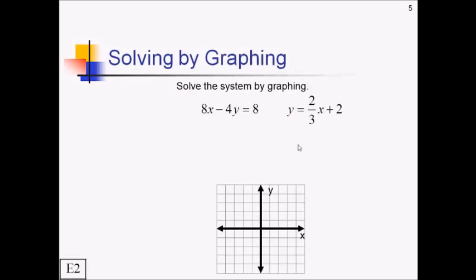Here's another example. Try this one on your own. Hopefully you put this equation in slope-intercept form first. So we'll subtract 8x and then divide everything by negative 4. That will be y equals 2x minus 2.